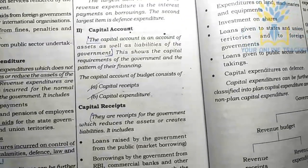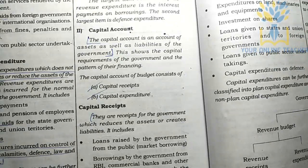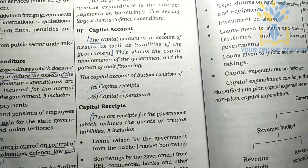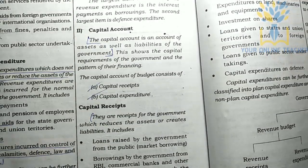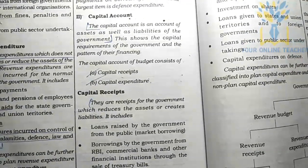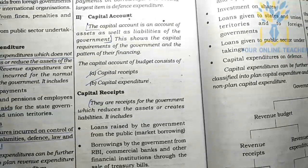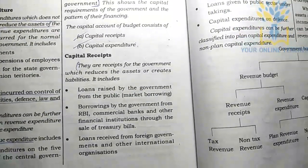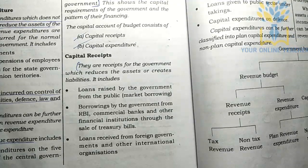The capital account is an account of assets as well as liabilities of the government. It shows the capital requirements of the government and the pattern of their financing. Capital receipts are receipts that reduce assets or create liabilities for the government.